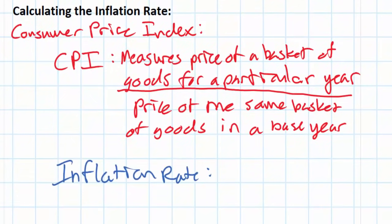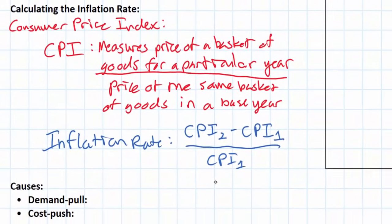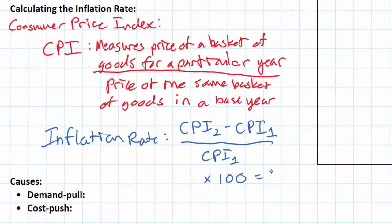Once the CPI has been determined for a particular year, the inflation rate can be found by finding the rate of change in the CPI between the year in question — call that year 2 — and the previous year — call that year 1 — and dividing the change in the CPI by the previous year's CPI. In other words, we find the rate of change in the CPI, multiply by 100, and what we get is a percentage that represents the inflation rate.